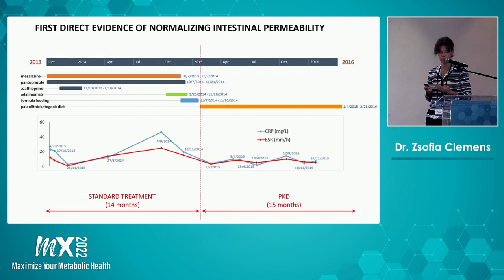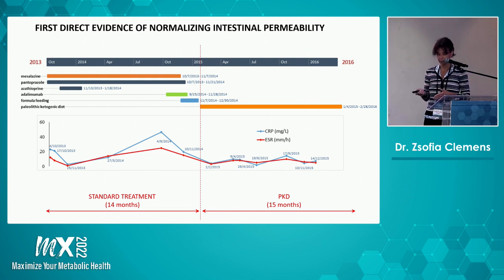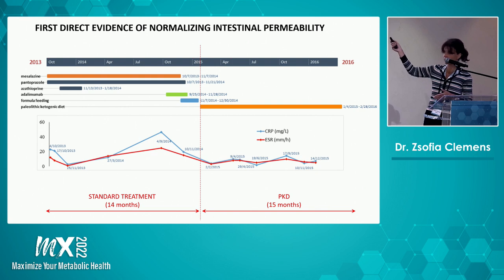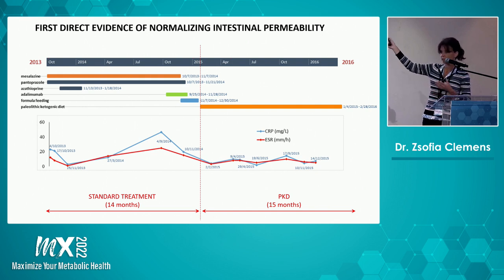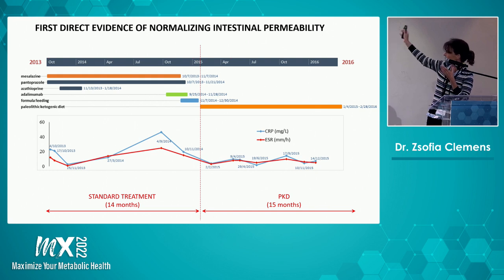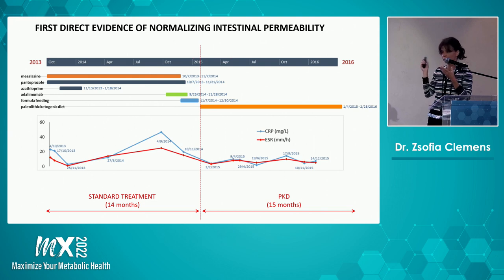Here is a more detailed representation of the inflammation level. On the top you can see the treatment the patient was receiving. The first part was while on a standard diet, and the second part on the right shows how the PKD affected inflammation levels — you can see CRP and ESR.